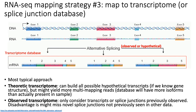In practice, a third strategy is typically used: mapping reads to a transcriptome database or a splice junction database. For most model organism genomes, you typically know where most protein-coding genes are and what the general intron and exon structure of those genes looks like. The idea is that either theoretically or using previously collected data, you take your genome sequence and build possible isoforms from those genes.